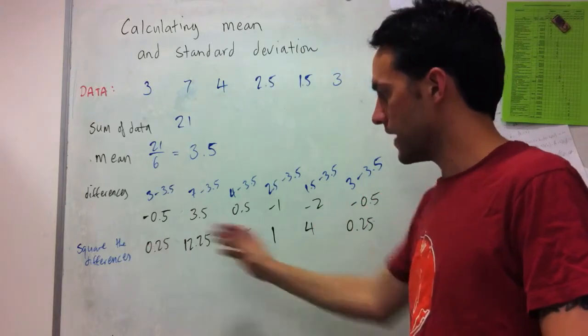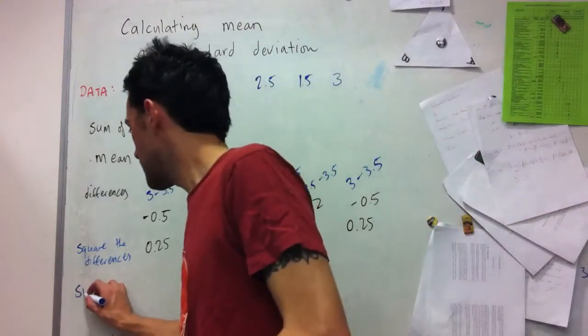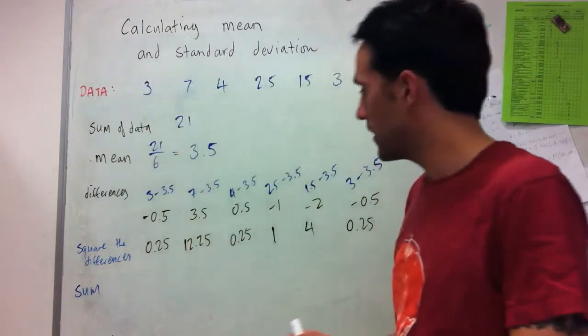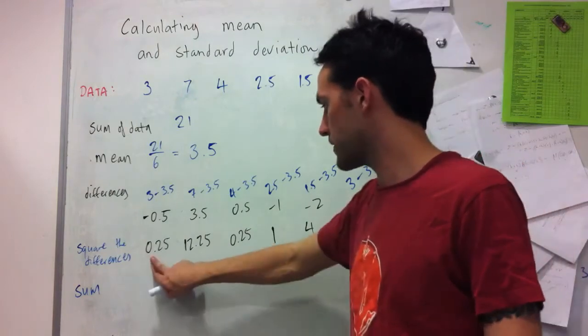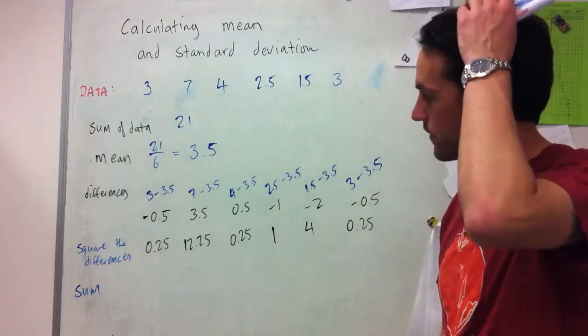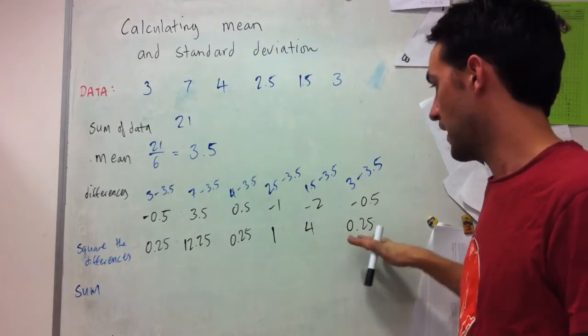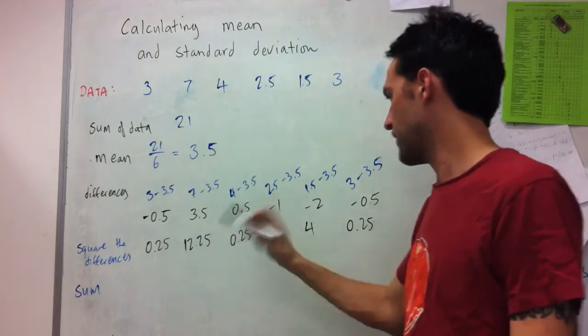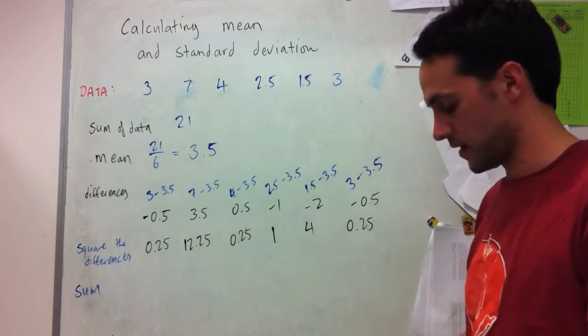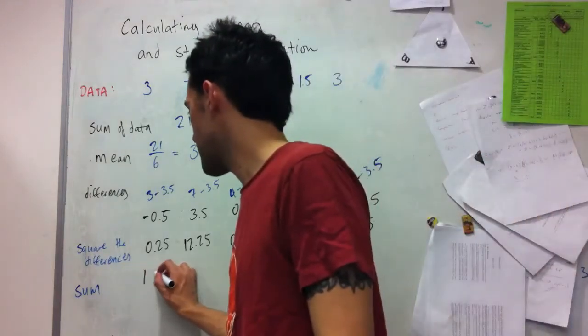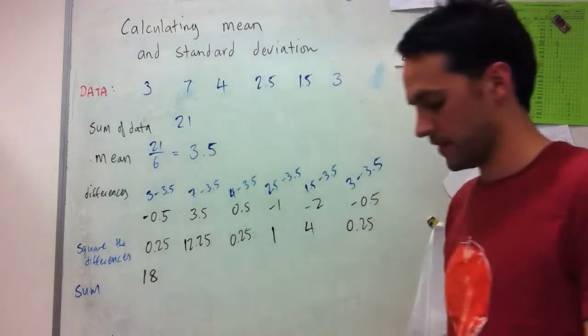And I then take the sum of these. So I'm going to have 0.25 plus 12.25 plus 0.25 plus 0.25. So I can actually put those together and get 13, 14, and then it's going to be 18 all up. The sum is 18.